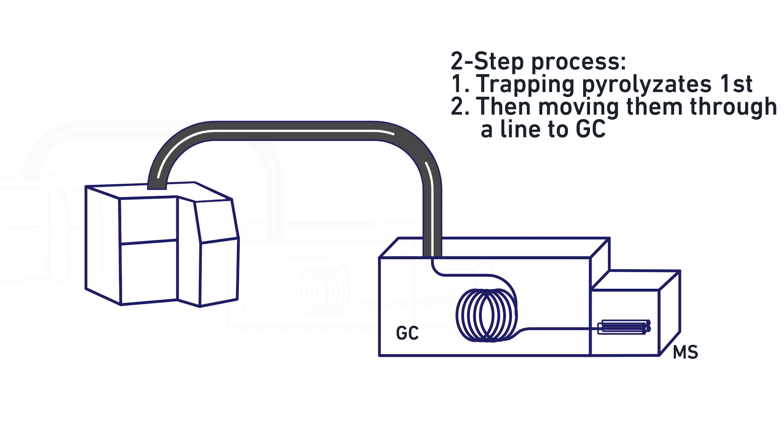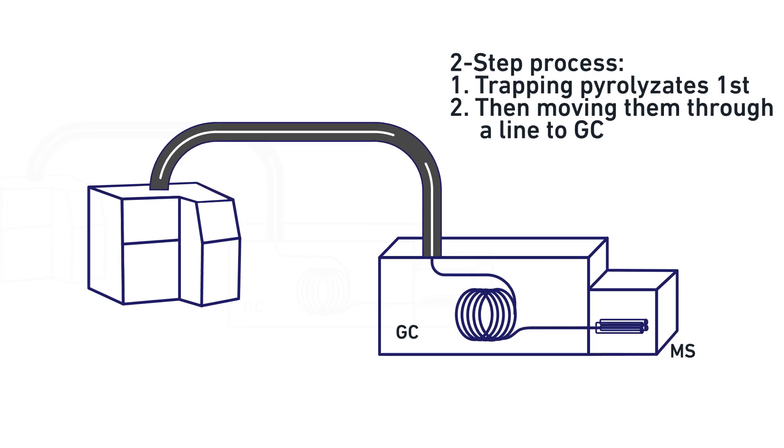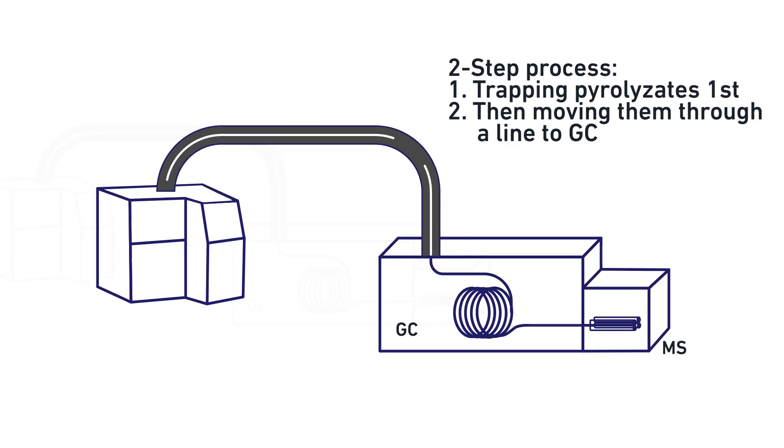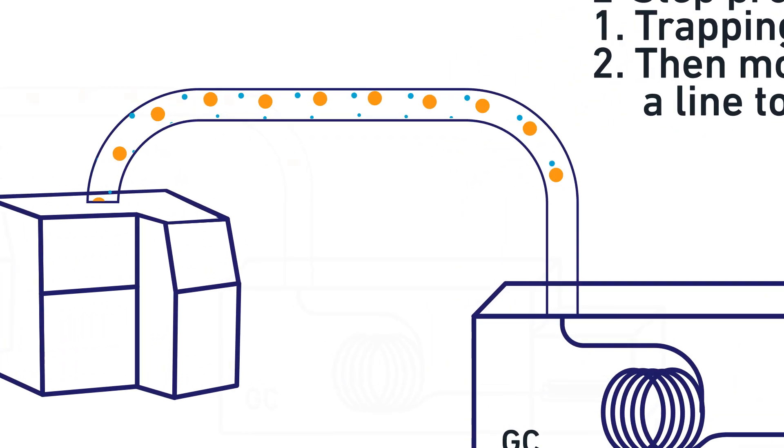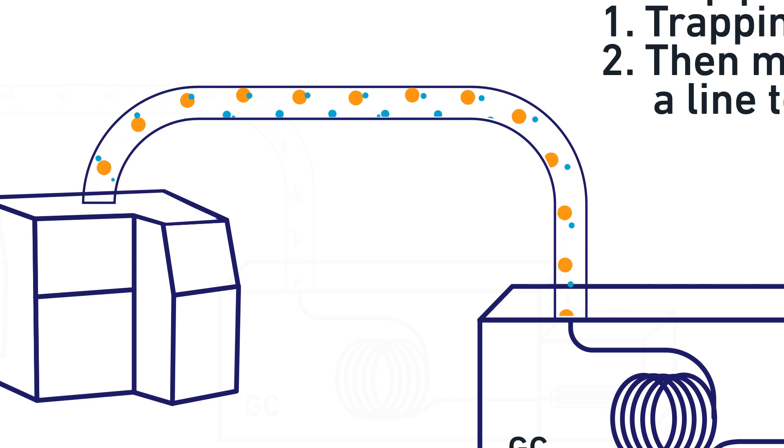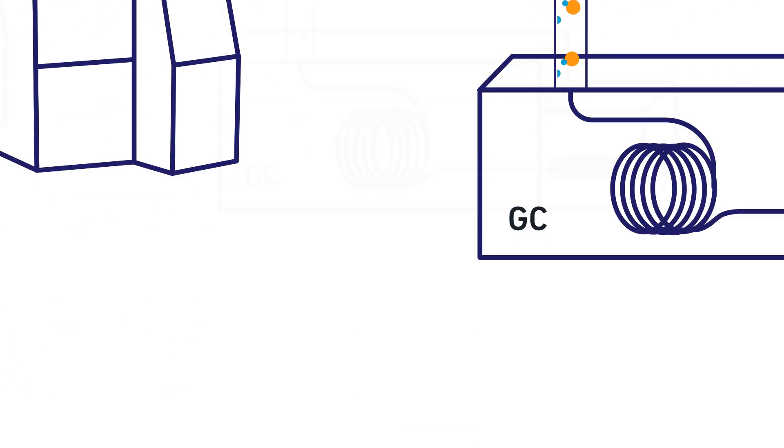During this two-step process, polar and heavy compounds may cause cross-contamination or be irreversibly stuck in the trap or the long transfer line and are not transferred for analysis because of the potential of cold spots in the system.